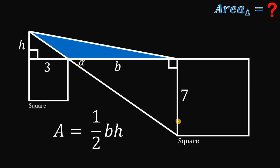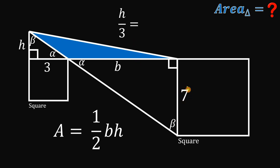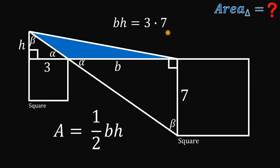If we call this angle alpha, then this angle must be beta. This angle over here is also alpha because vertical angles are congruent. If this is alpha, the other angle is also beta, because alpha plus beta must equal 90 degrees. So we have two similar triangles. We can now use ratio and proportion: the ratio of the smaller leg to the longer leg of the small triangle is H over 3, and this must equal 7 over B for the big right triangle.